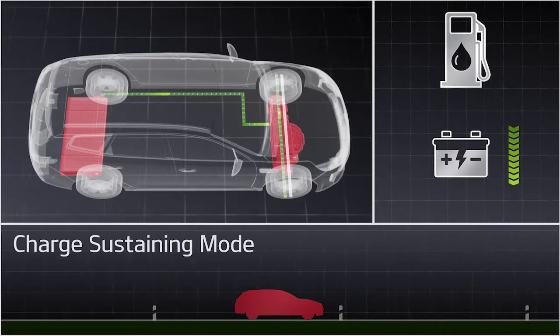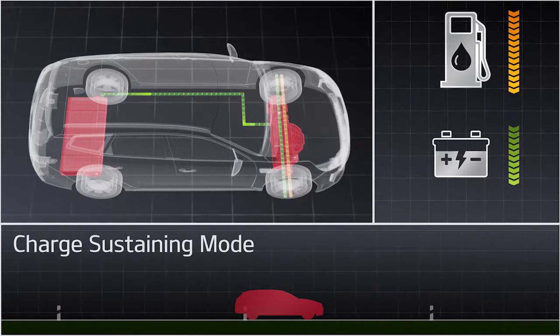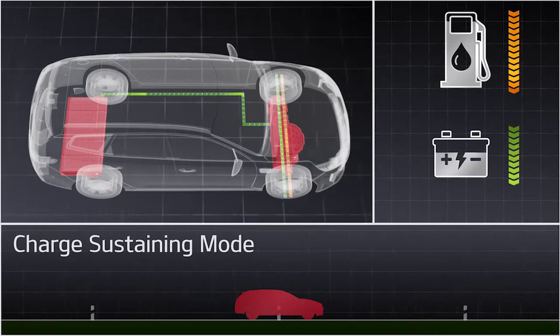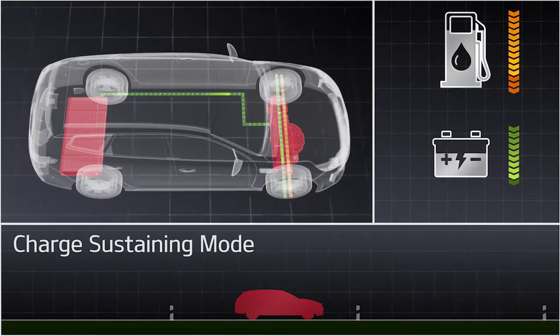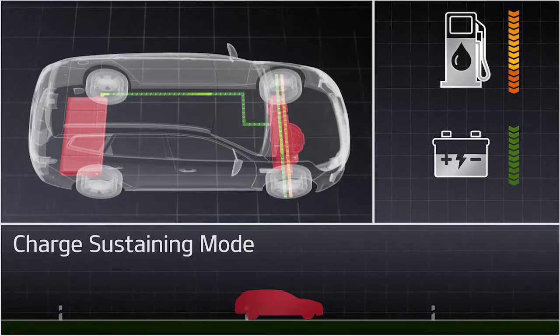When the high voltage battery levels are low, the car will enter the charge sustaining mode, which is the hybrid mode. This is the second driving mode.